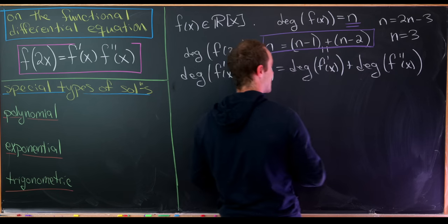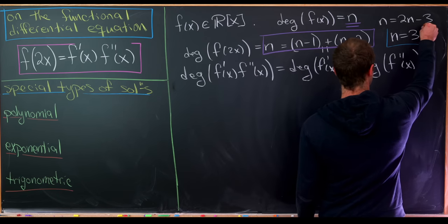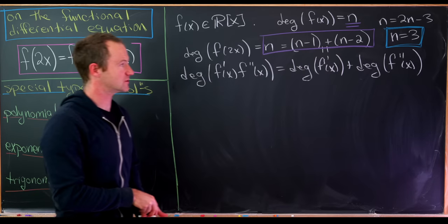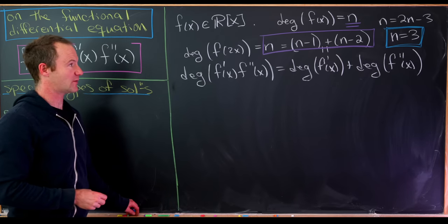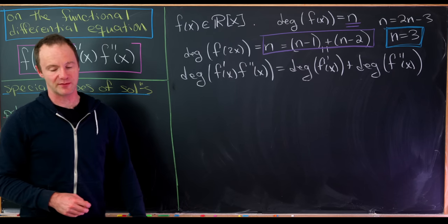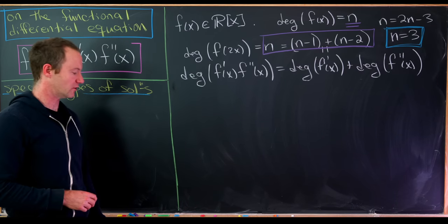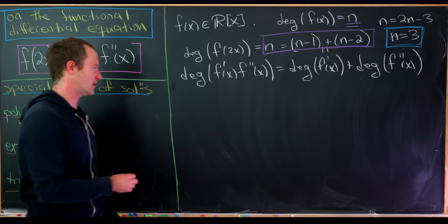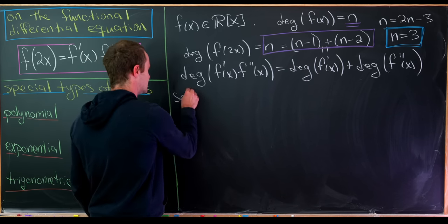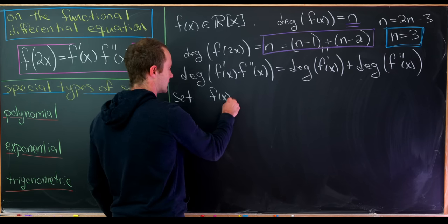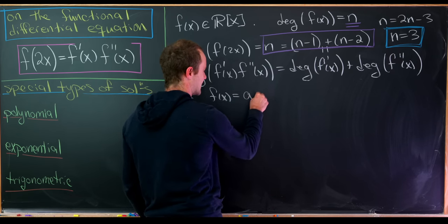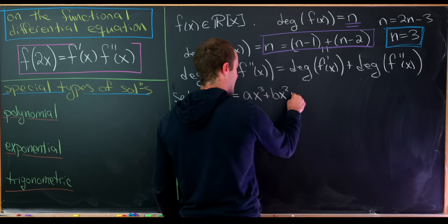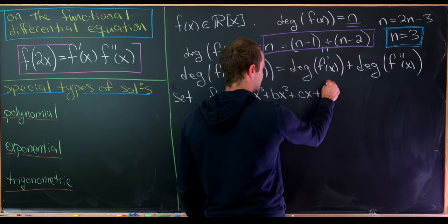So if we have a polynomial solution, it will be a third-degree (cubic) polynomial. Let's now find it. We set f(x) equal to an arbitrary cubic: ax³ + bx² + cx + d.